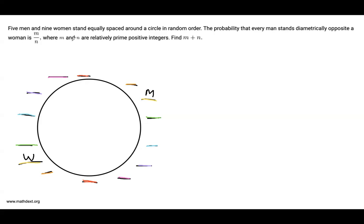If I were to randomly choose a guy or a girl from the remaining 13 people, what's the probability that this is a woman? Well, there are nine women and 13 other people, so that probability is 9 over 13.